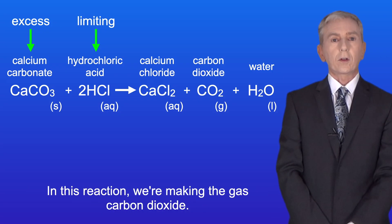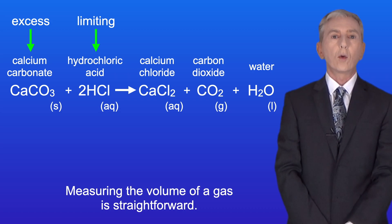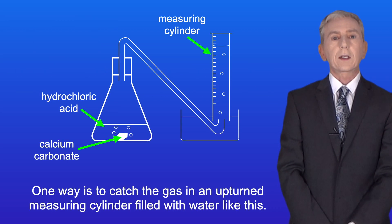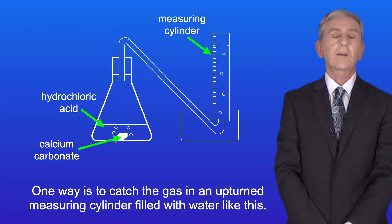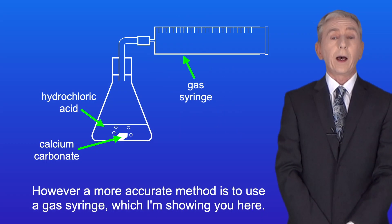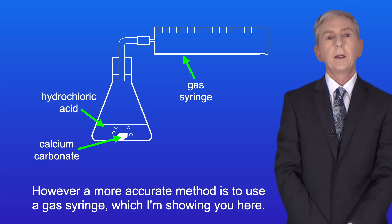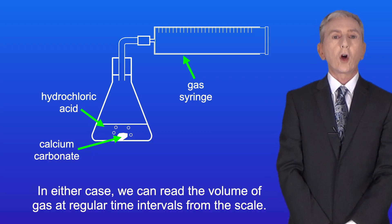In this reaction we're making the gas carbon dioxide and measuring the volume of a gas is straightforward. One way is to catch the gas in an upturned measuring cylinder filled with water like this. However a more accurate method is to use a gas syringe which I'm showing you here. In either case we can read the volume of gas at regular time intervals from this scale.